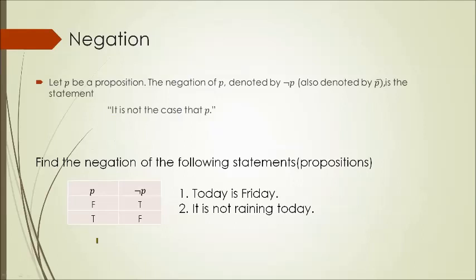The negation of P is denoted by the negation symbol or a bar over P, and means 'it is not the case that P.' If P is false, then NOT P is true; if P is true, then NOT P is false. Example statements: 'Today is Friday' and 'It is not raining today.'